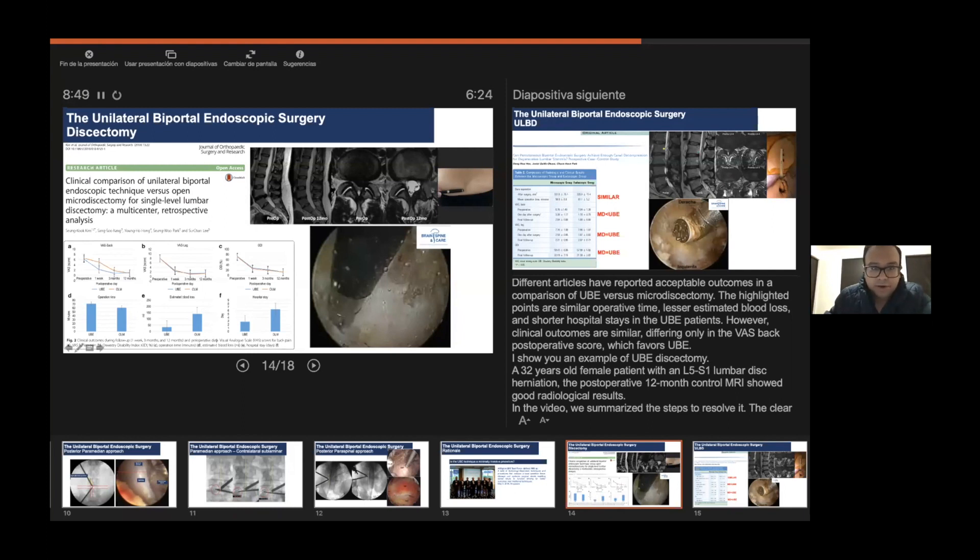However, clinical outcomes are similar, differing only in the VAS back postoperative score which favors UBE. I show you an example of a 32 year old female with a discectomy at L5-S1 lumbar segment. The postoperative MRI at 12 months shows good clinical results. Here in the video we summarize the steps to perform the discectomy. We perform a small laminotomy, then we detach the cranial insertion of the ligamentum flavum. Finally we have control of the subarticular zone where the disc herniation is, and then we perform the discectomy as usually performed in open or microsurgery.